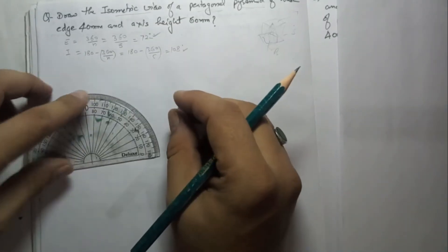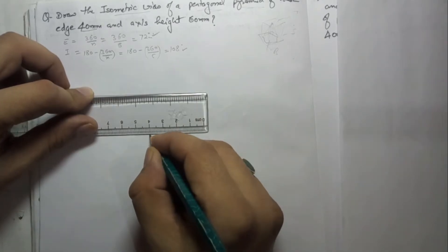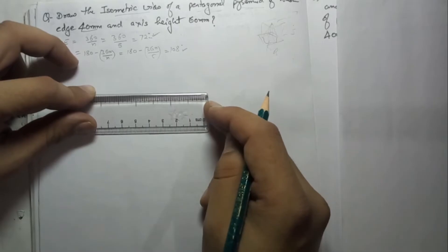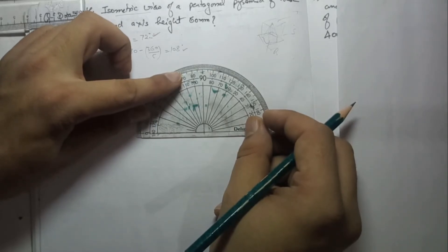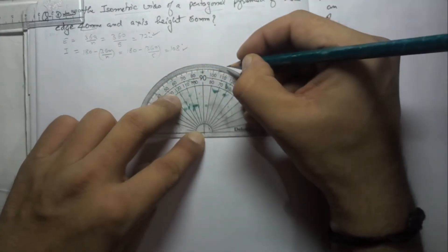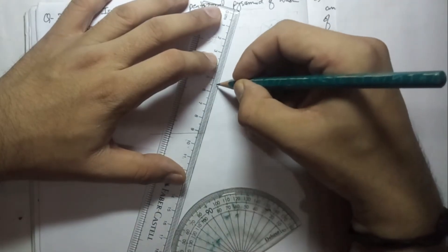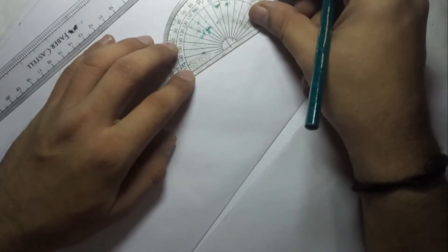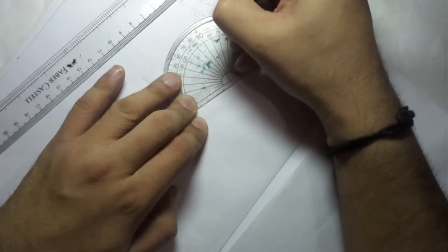The pentagon has a base edge of 40 mm, so first we take the base edge as 40 mm and draw it with exact dimensions. Then I take the protractor — the internal angle is 108 degrees. I put zero here and from this side measure the angle, getting 108 degrees. On this point I cut 40 mm for the next side, then rotate the sheet and again take the protractor, marking zero and measuring 108 degrees.